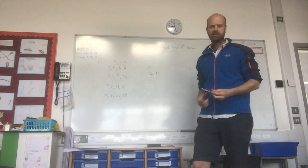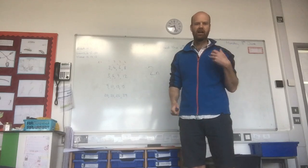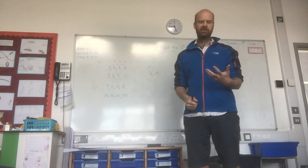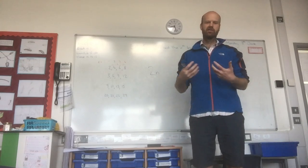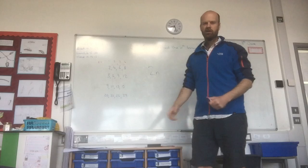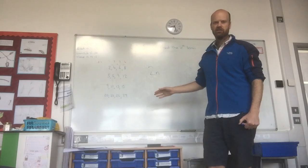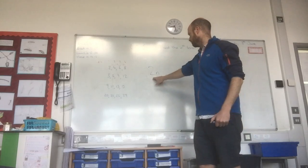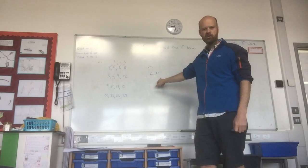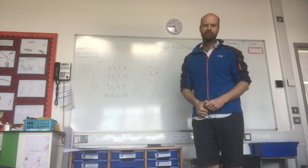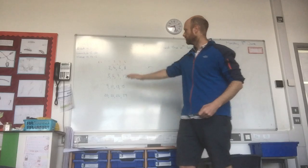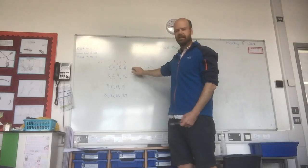That means that if I wanted to work out the hundredth number in the sequence, which is the same as saying n equals 100, all I'd have to do is 2 times 100, and that would give me 200. So it's a nice, straightforward sequence.